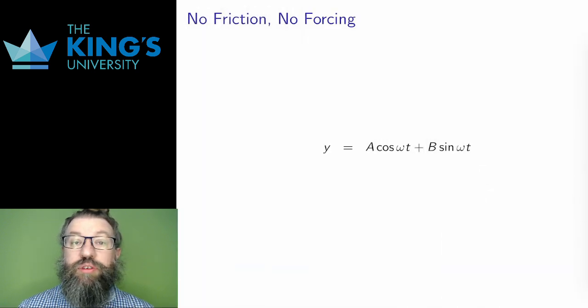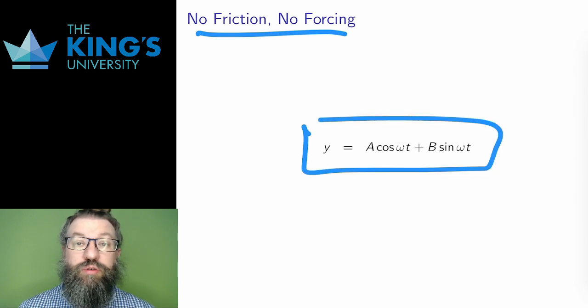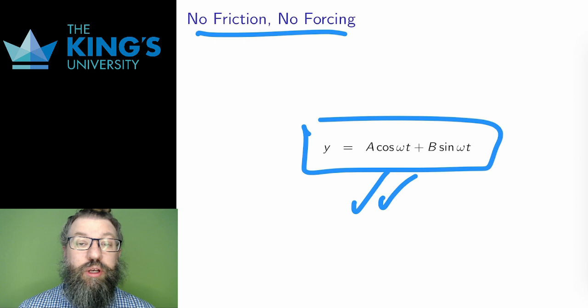First, if there is no friction and no forcing, then these are the solutions. The system oscillates forever with no friction or forcing to interfere. The frequency is omega, the natural frequency. What the spring and the mass will naturally do without anything to stop them or push them around in a different way.